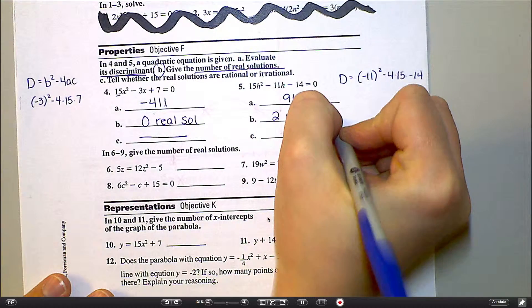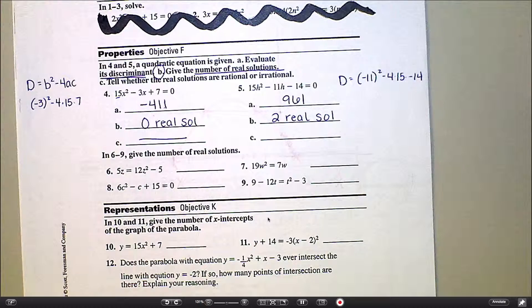So that is a positive discriminant. And because I can take a square root of it, I'm going to have two real solutions here. So positive I get 2, negative I get 0. The only time you're going to get just 1 is if it comes out to be exactly 0. If the discriminant comes out to be exactly 0.